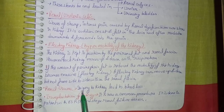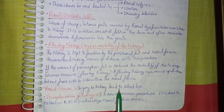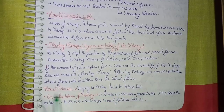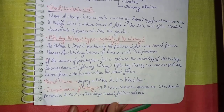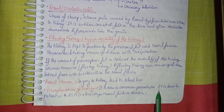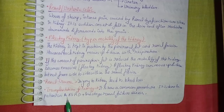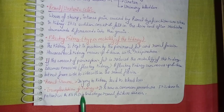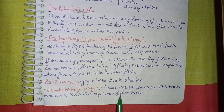Renal trauma: injury to the kidney which leads to blood loss is called renal trauma. Coming to transplantation of the kidney: it is now a common procedure done in patients with ESRD — end-stage renal disease.